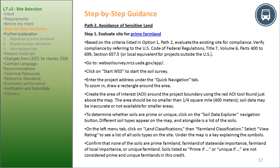To determine whether soils are prime or unique, click the Soil Data Explorer navigation button. Different soil types appear on the map with a list alongside. On the left menu, click Land Classifications, then Farmland Classification. Select View Rating to see a list of all soil types on the site; a key under the map explains the symbols. Confirm that none of the soils are prime farmland, farmland of statewide importance, farmland of local importance, or unique farmland. Soils listed as 'prime if' or 'unique if' are not considered prime or unique farmlands under this credit.